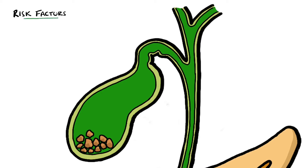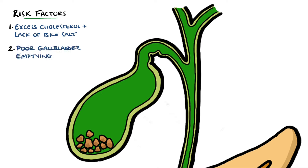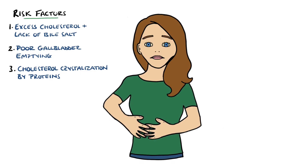The stones are formed due to multiple factors. The main three reasons for stone formation are: an excess of cholesterol and a lack of bile salt; an incomplete or infrequent contraction and therefore emptying of the gallbladder; and the presence of proteins in the liver and bile that play a role in cholesterol crystallization into gallstones.